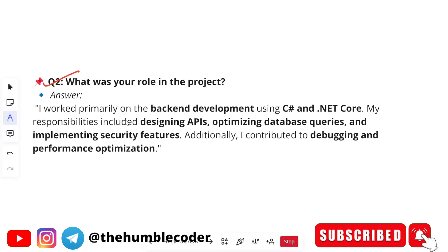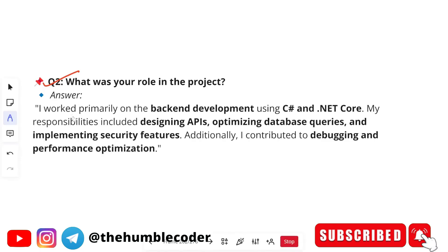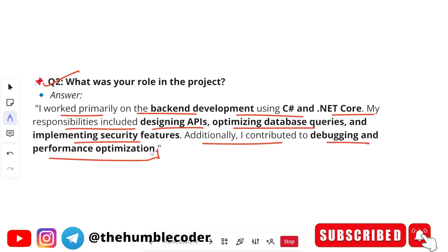The next question is: 'What was your role in the project?' If you worked in a team, you need to explain your specific role. If it was an individual project, you can say you handled all aspects yourself. For a team project, a sample answer is: 'I worked primarily on back-end development using C# and .NET Core. My responsibilities included designing APIs, optimizing database queries, implementing security features, and contributing to debugging and performance optimization.'